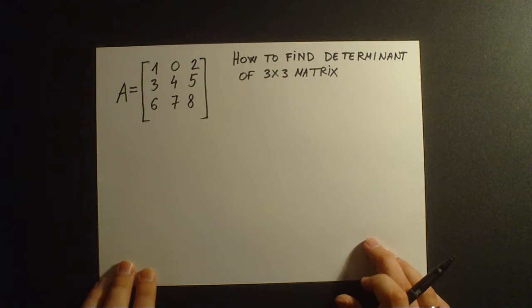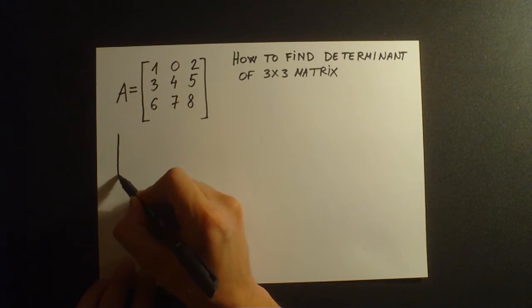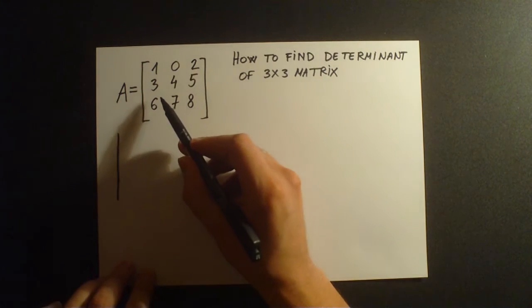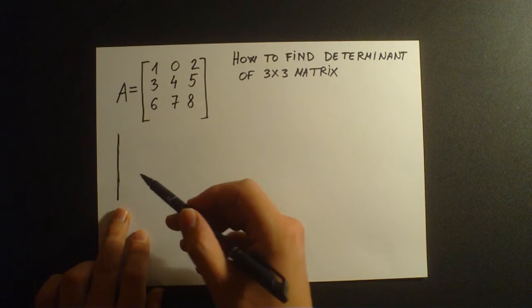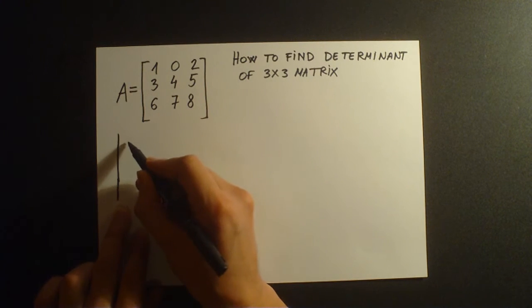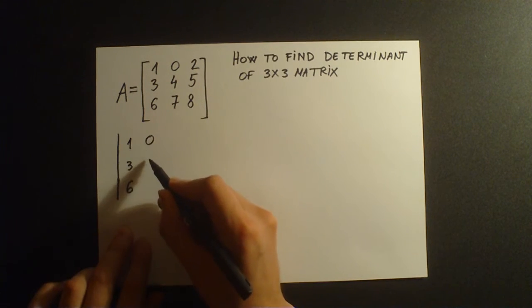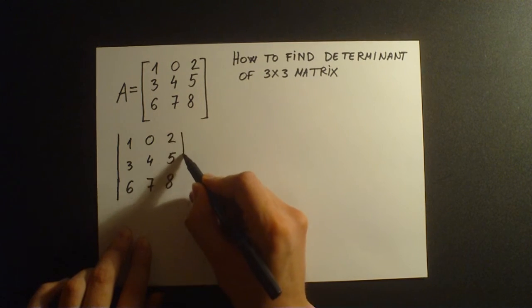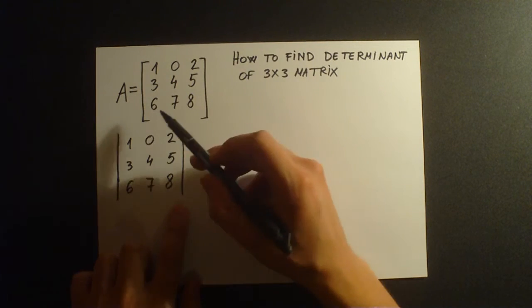If we want to find the determinant of matrix A, first we're going to put those values of the matrix into the brackets that are similar to absolute value brackets. In the first column we have numbers 1, 3, 6; second column: 0, 4, 7; and third column: 2, 5, 8. Right after closing those brackets we're going to write again the first two columns of our matrix A.